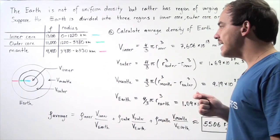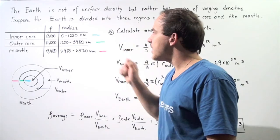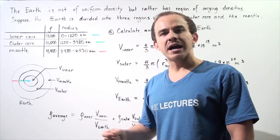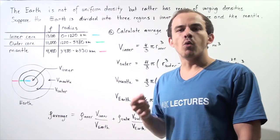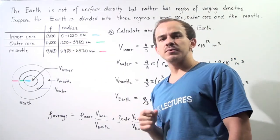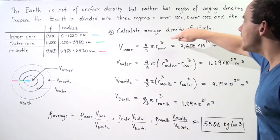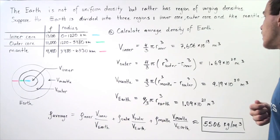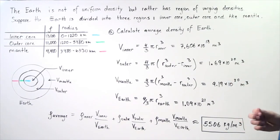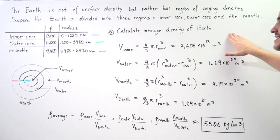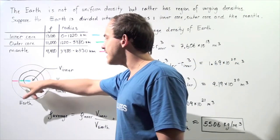The radius of the inner core is simply 1,220 kilometers multiplied by 1,000 to convert to meters. We take this quantity, multiply by 1,000, cube it, multiply it by four-thirds pi, and we get approximately 7.60 times 10 to the 18 meters cubed as the volume of the inner core.